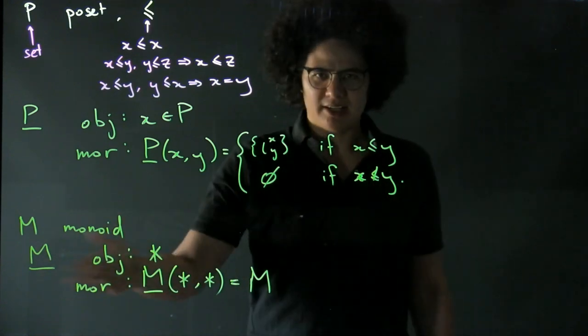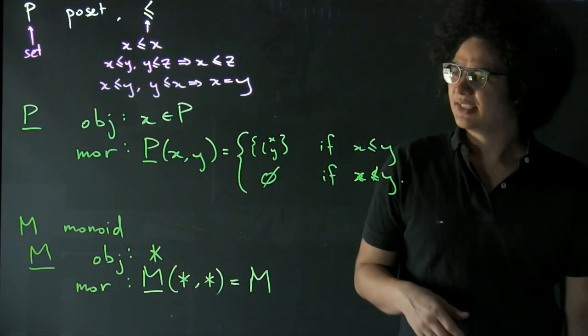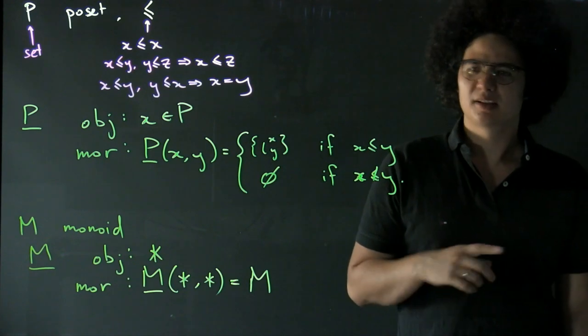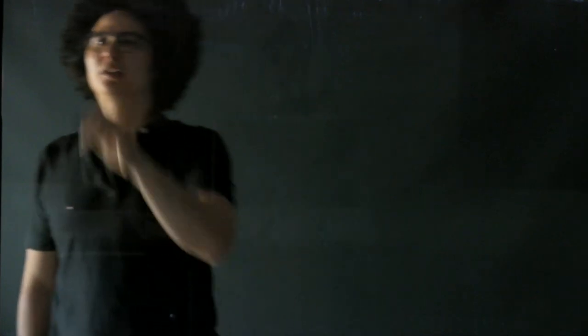And a monoid category is, or a category built this way from a monoid, is a category with a single object but however many morphisms you want. Next we're going to talk about a category that we're going to call delta.